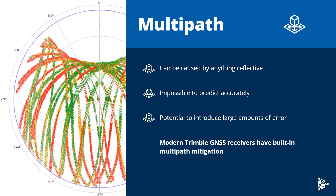Multipath is another big source of error — duplicate signals that arrive at different times. It can be caused by anything reflective. When installing a GNSS antenna, whether a permanent base station or a rover unit, if you're measuring next to something reflective like a window, a building, a solar panel, or even leaves — leaves can be more reflective than you think and cause a lot of multipath — it can introduce multiple signals with the same timestamp and overwhelm the receiver. One of the challenges with multipath is that it's really impossible to predict, because satellite orbits are constantly changing and the environment isn't always predictable, whether it's an urban environment or changing foliage through the seasons.